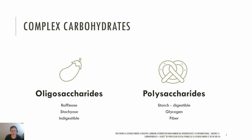The polysaccharides include starch, which is digestible. Starch is a mixture of amylose and amylopectin. Sources include tubers, potatoes, rice, beans, and pasta. Refined starch, like cornstarch, is often used as an ingredient in processed foods as a thickener.